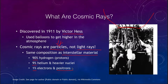The positron is the antiparticle of the electron. Now when we look at cosmic rays, there are some differences that we see. Overall, the rough composition is similar to other interstellar material, but there are some differences compared to other things that we've seen.